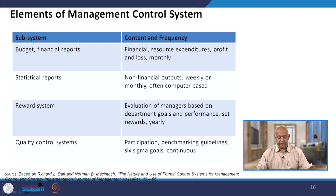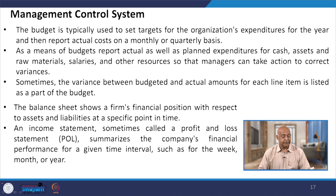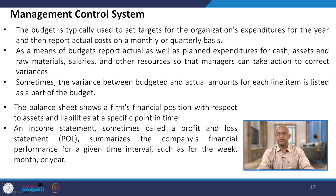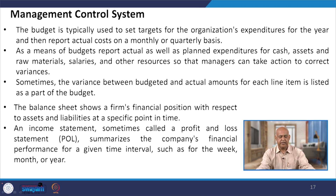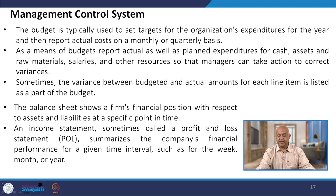Quality control systems involve participation, benchmarking guidelines, six sigma goals, and continuous improvement. The budget, typically used under the management control system, covers the organization's expenditure for the year and reports actual costs on a monthly or quarterly basis, including planned expenditure for cash, assets, raw materials, salaries, and other resources, so that managers can take action to correct variances.